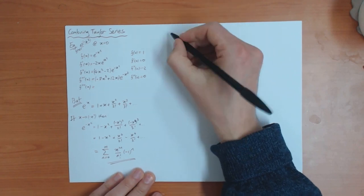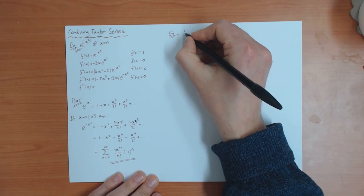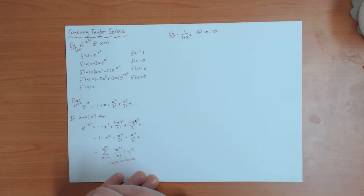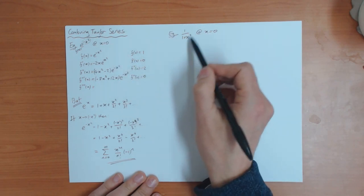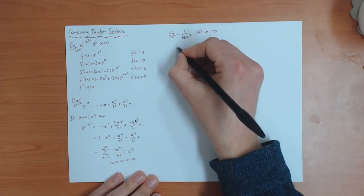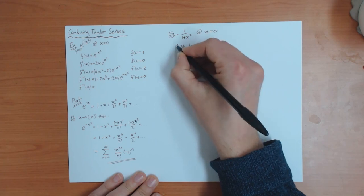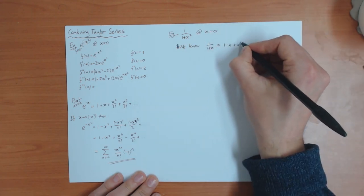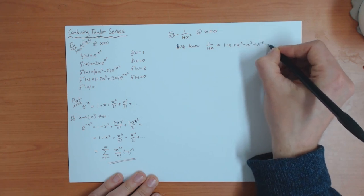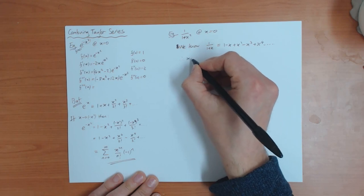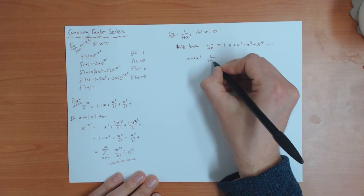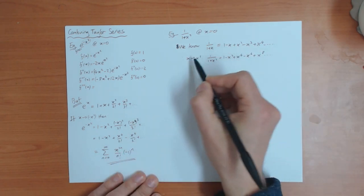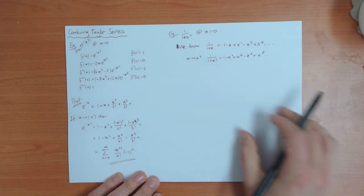Just another example to make sure you get this idea. Suppose I want to find the Taylor series of 1 over 1 plus x squared at x equals 0. Again, you could differentiate this function, and you'll find it's also very difficult after a few times. But instead, we know that the Taylor series of 1 over 1 plus x is 1 minus x plus x squared minus x cubed plus x to the 4 and so on. Therefore, substituting x goes to x squared gives 1 over 1 plus x squared equals 1 minus x squared plus x to the 4 minus x to the 6 and so on. Substitution is much easier than calculating from the definition.